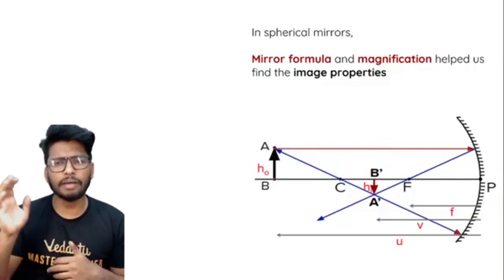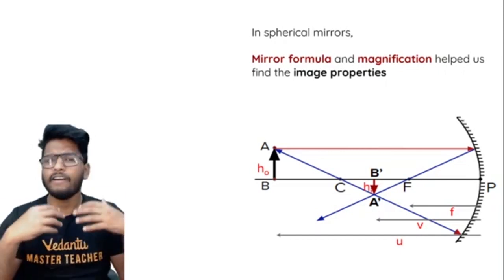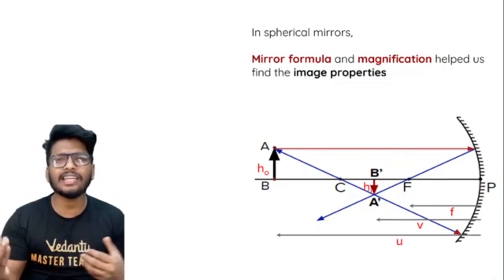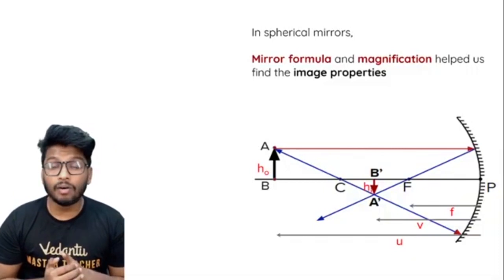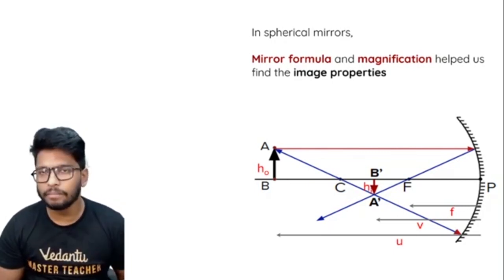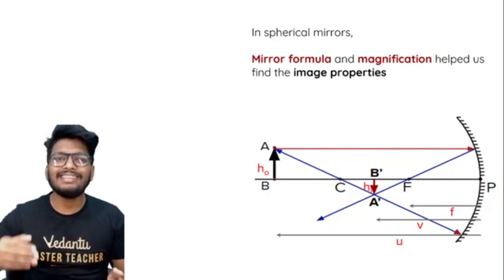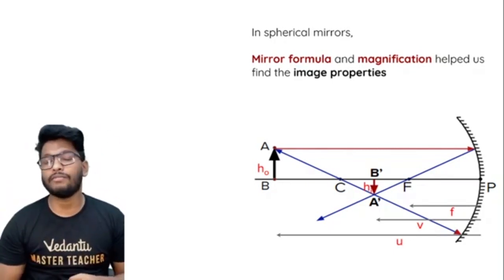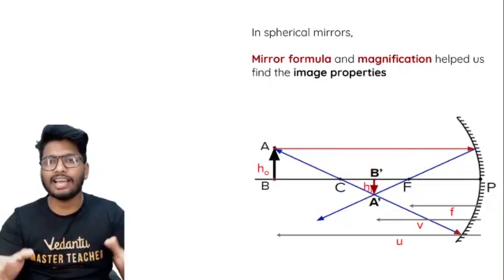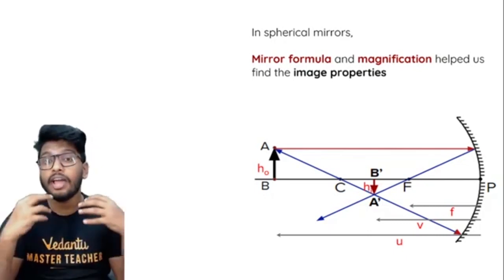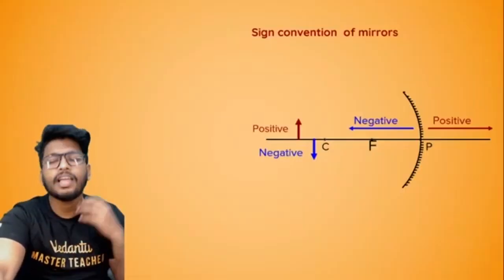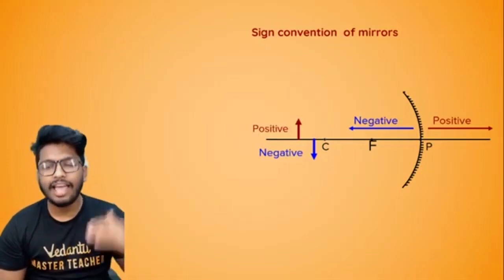Before getting into lenses, let me talk a little about mirrors. We did ray diagrams and problems using the mirror formula and magnification to find image properties. A ray diagram tells you approximately where the image is found, but the mirror formula or lens formula tells you exactly where the image is formed, where the object is placed, or exactly what the focal length is.